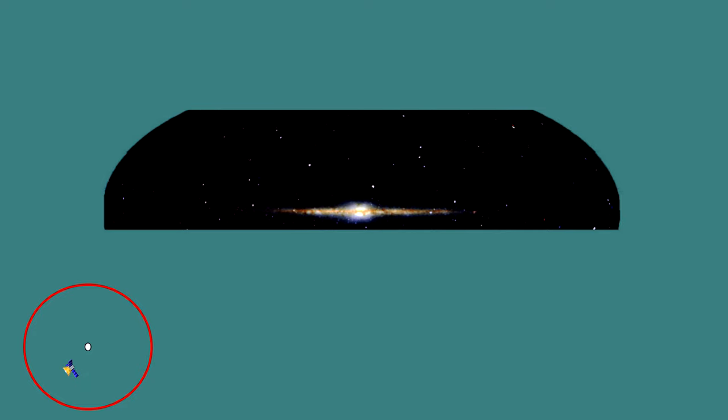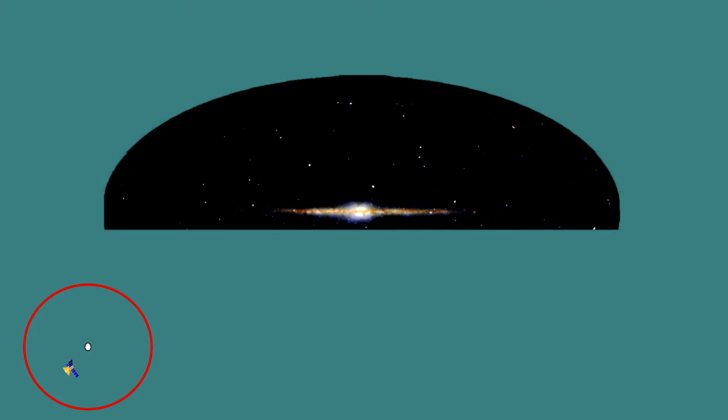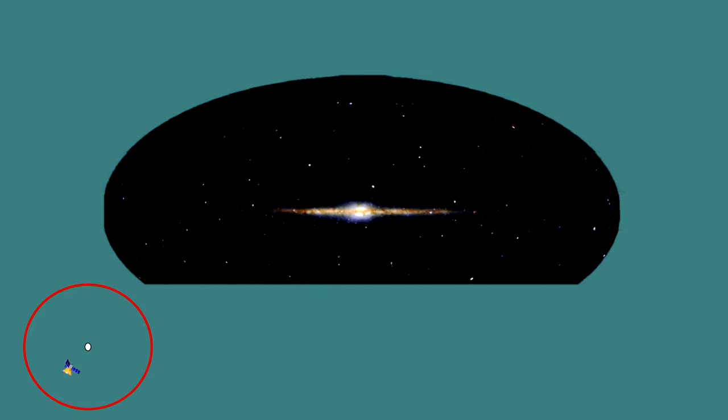The last shot is taken with the camera pointing straight up, perpendicular to the galactic plane. We then repeat the process for the southern sky, and we have the entire picture.